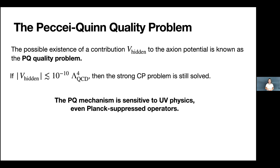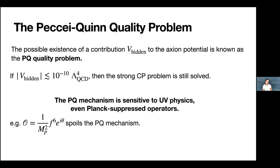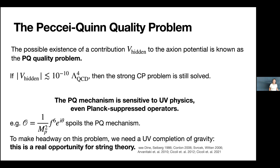For example, an operator like 1/M_Planck^2 times some scale that's not too small spoils the Peccei-Quinn mechanism. To make headway on this problem, you really need a UV completion of gravity because it's sensitive to Planck-suppressed operators. This is a real opportunity for string theory.